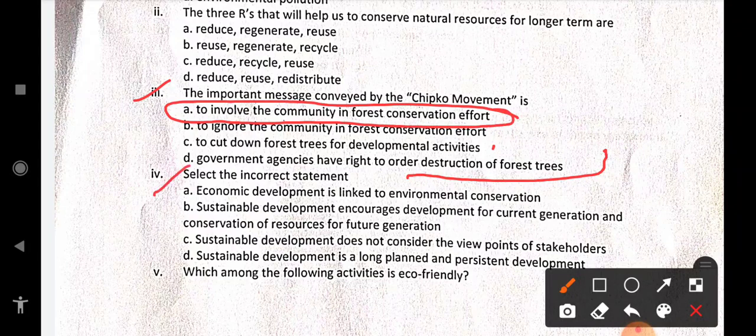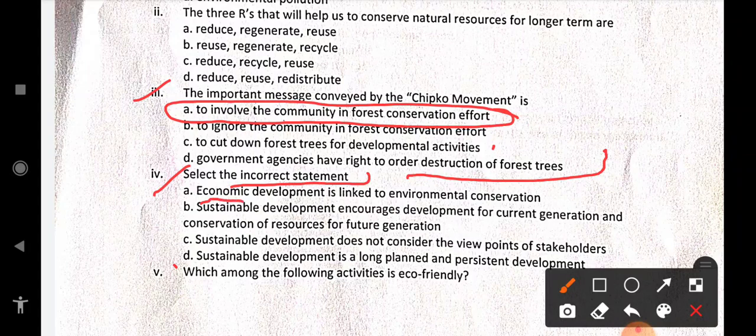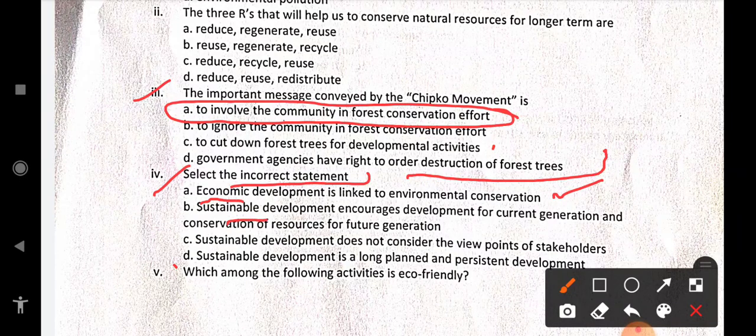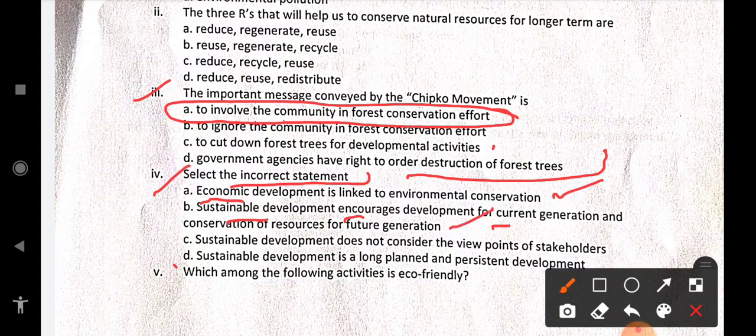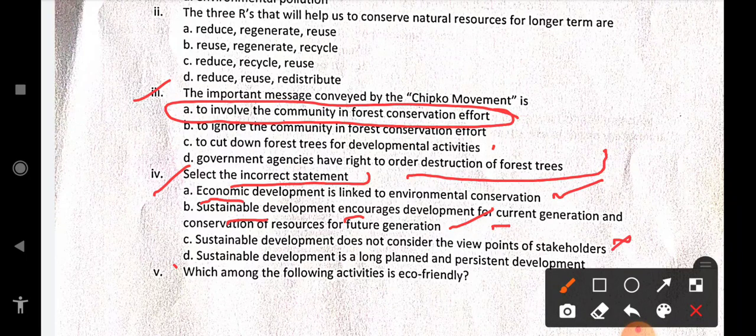Select the incorrect statement. You have to select the incorrect statement out of these. First is economic development is linked to environmental conservation. This is correct. Sustainable development encourages development for current generation and conservation of resources for future generation. This is also correct. Sustainable development does not consider the viewpoints of stakeholders. No. Sustainable development is a long planned and persistent development. Yes. So C option is correct.